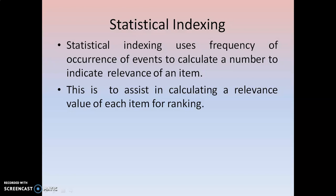Statistical indexing uses the frequent occurrence of events. We calculate the number of occurrences of a particular item and its relevance — whether any relevant item exists and how many times it exists. All these things are taken care of by statistical indexing. This assists in calculating a relevance value for each and every item for ranking. We rank items based on the number of occurrences.